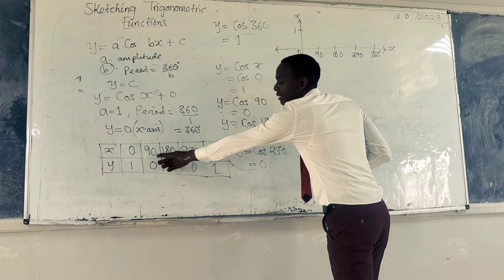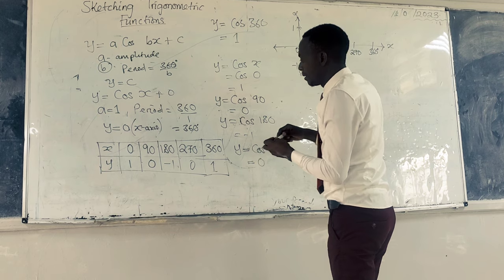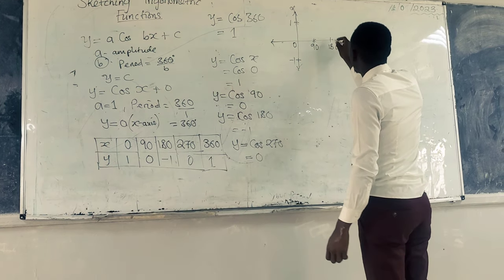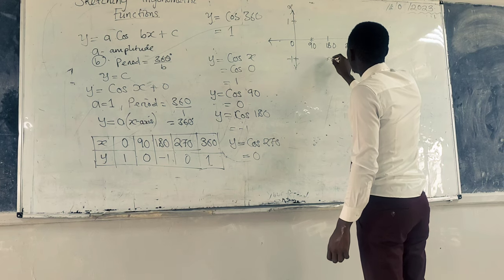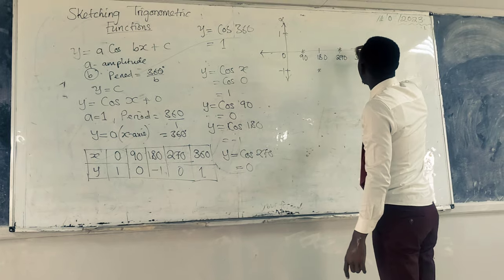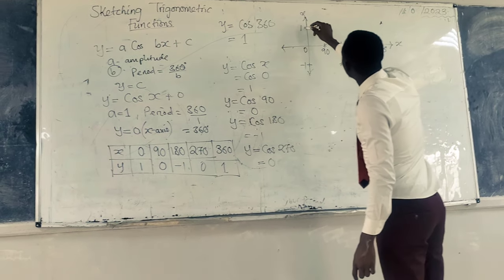Then we have (90,0). Then we have (180,-1). (270,0). And (360,1). So the function will be drawn like this.